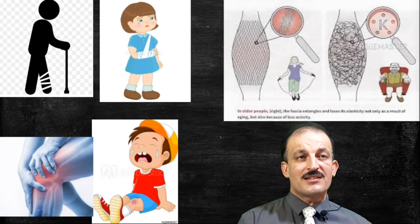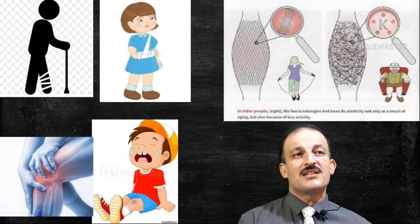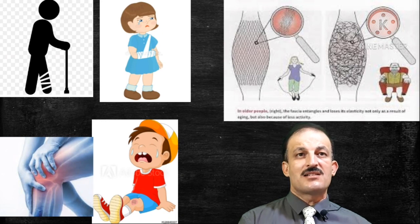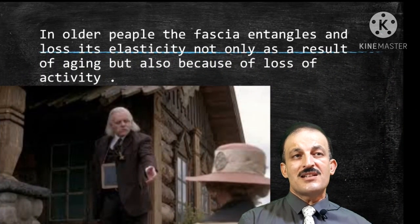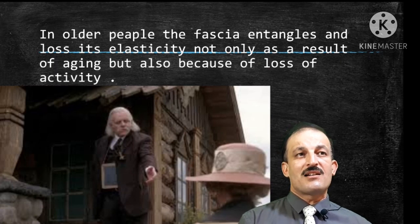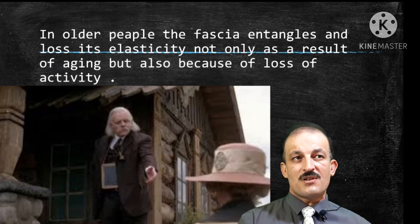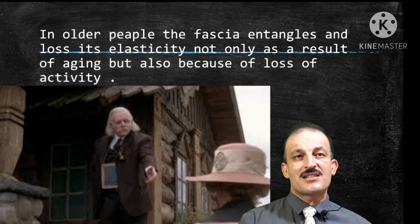All four basic tissues of the human body have many clinical applications, as shown in this figure. In older people, the fascia entangles and loses its elasticity, not only as a result of aging but also because of loss of activity. Thank you for listening — to be continued.